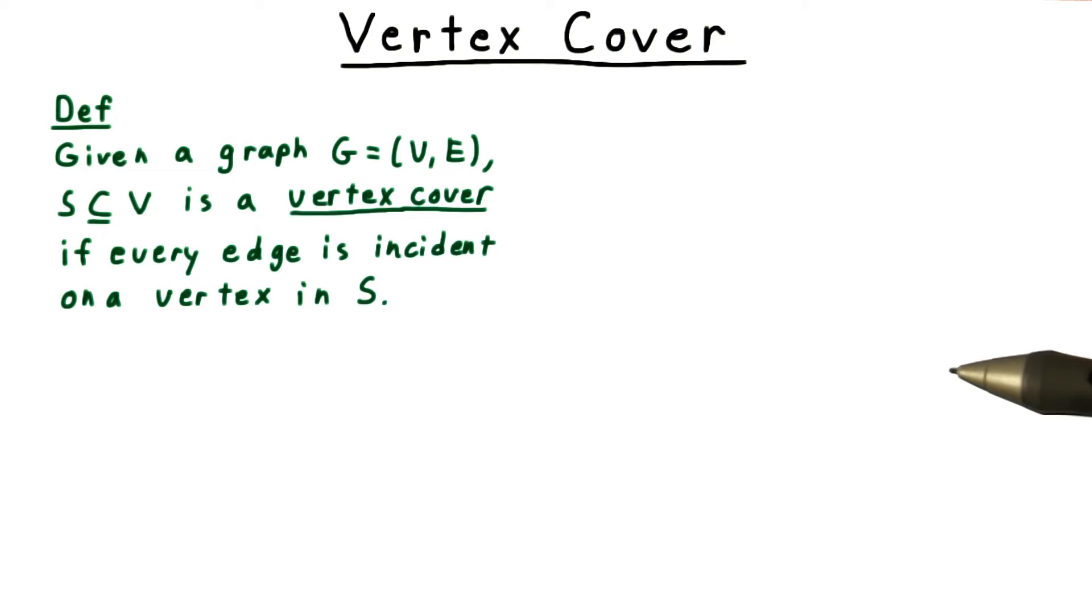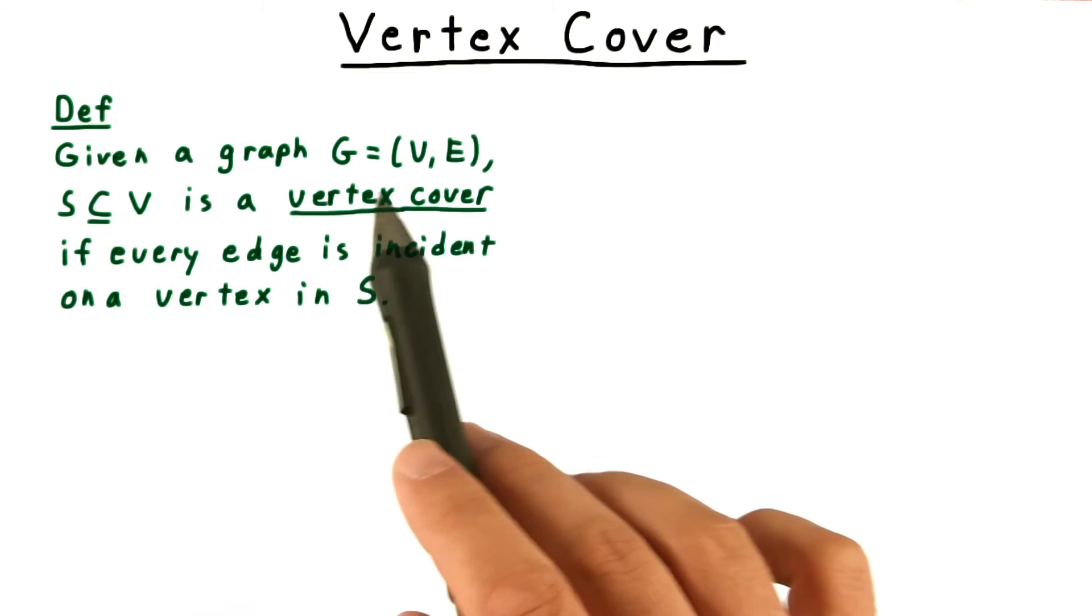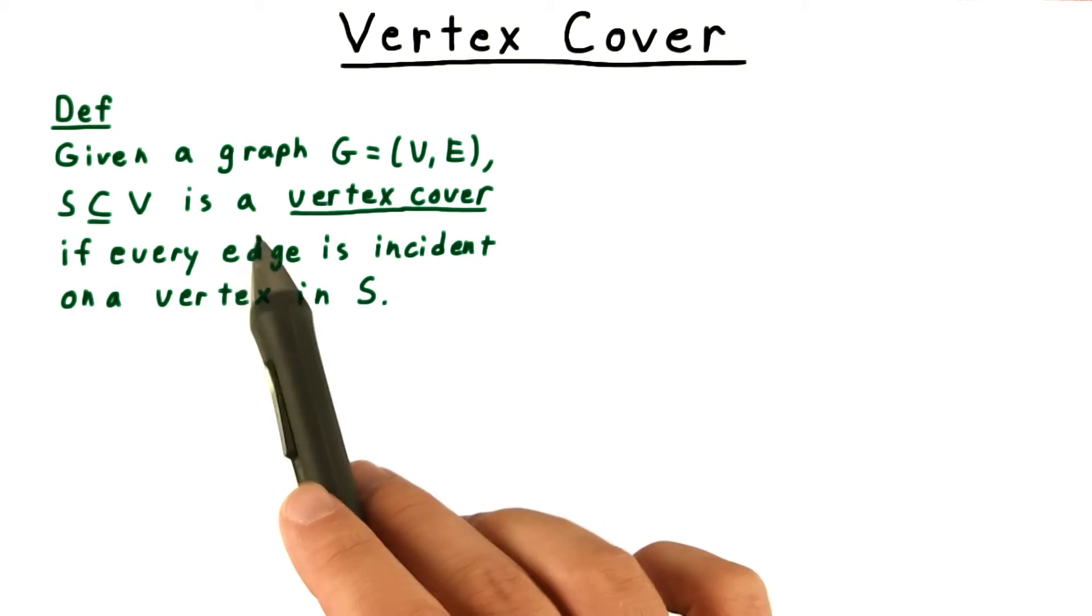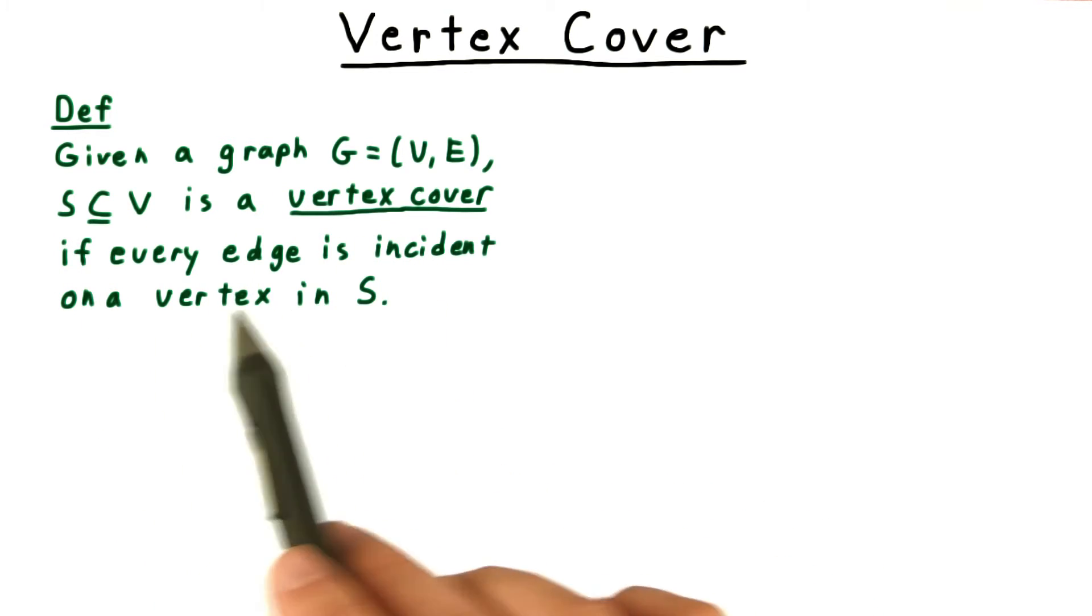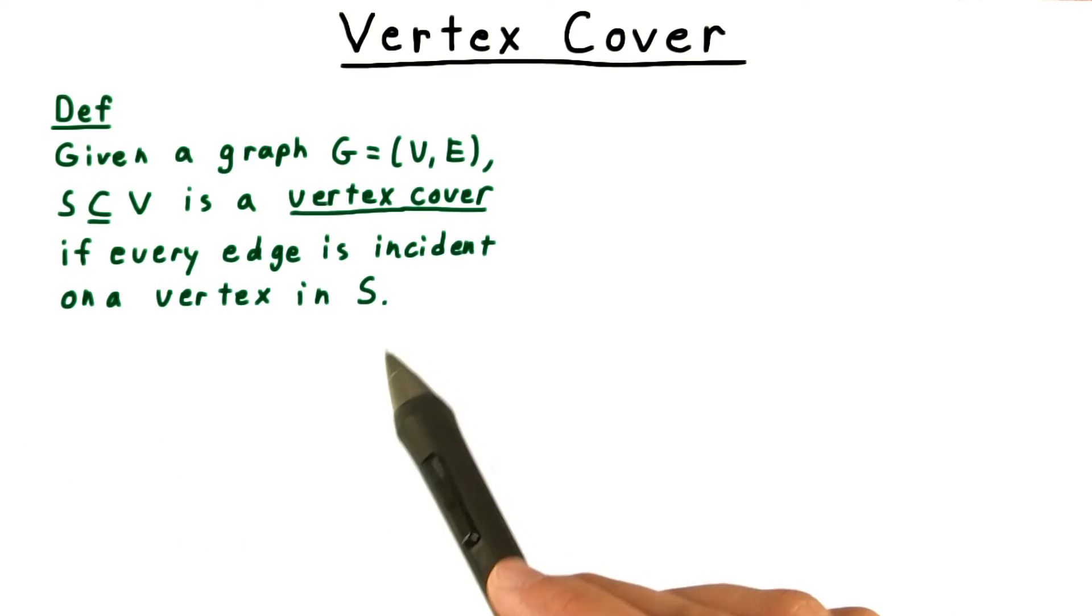Now let's define the other problem that will be part of our example reduction: vertex cover. Given a graph G, a subset of the vertices S is a vertex cover if every edge is incident on a vertex in S.